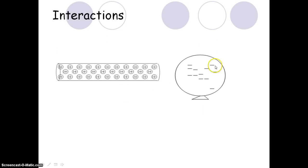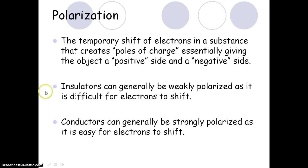Insulators can generally be weakly polarized since it's difficult for electrons to shift, but conductors can become strongly polarized with a definite positive and a definite negative side. This is how a charged balloon sticks to a wall — the wall becomes polarized, with one side that's somewhat positive and one side somewhat negative, so the negatively charged balloon attracts to the positive side. Polarization is an extremely important concept: it's a temporary shift in electrons that creates poles of charge, giving an object a positive side and a negative side. Be sure all your notes are filled out.